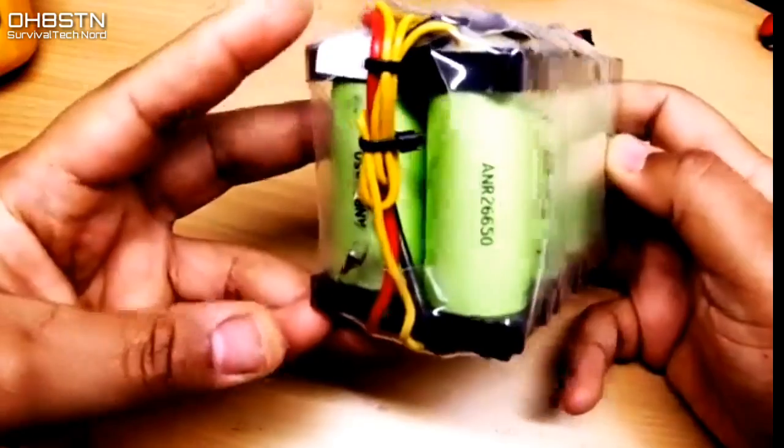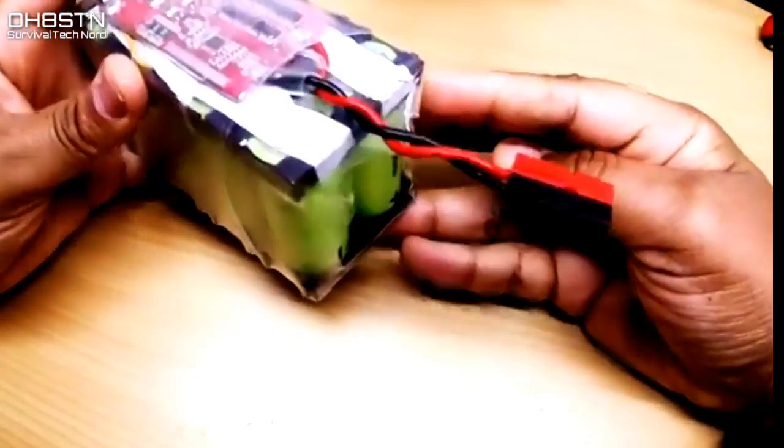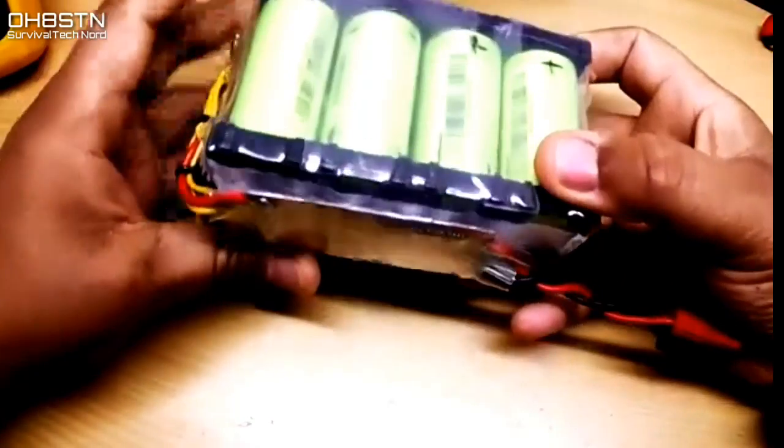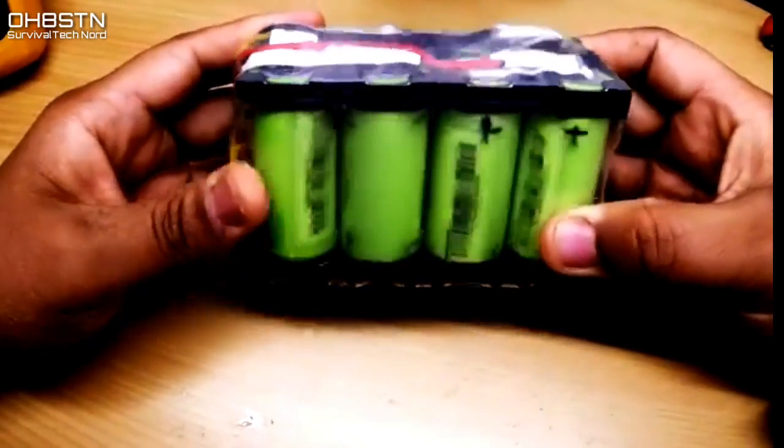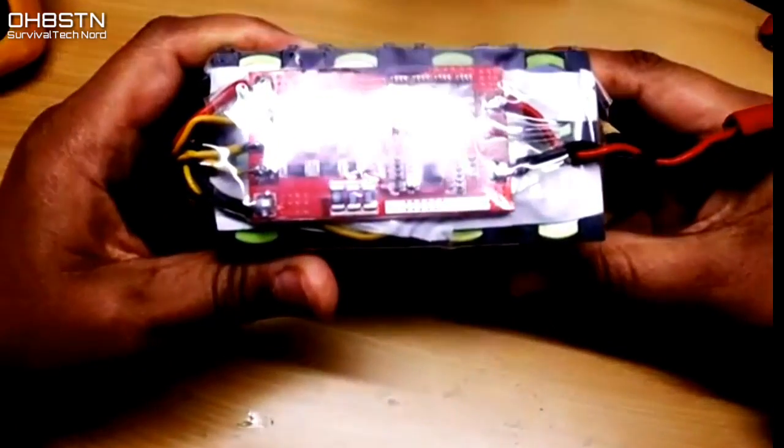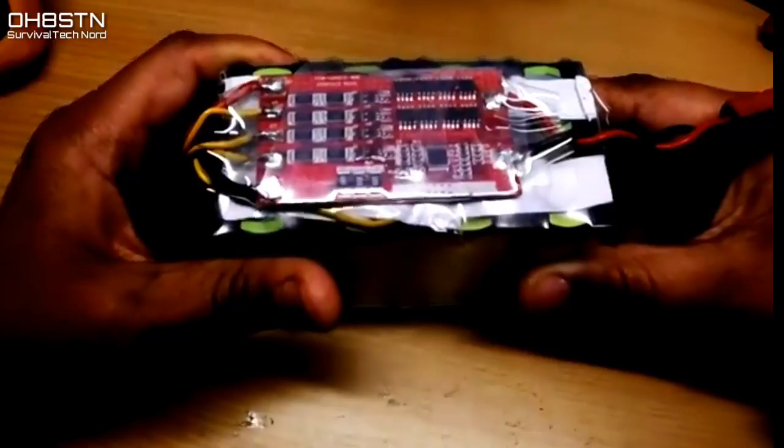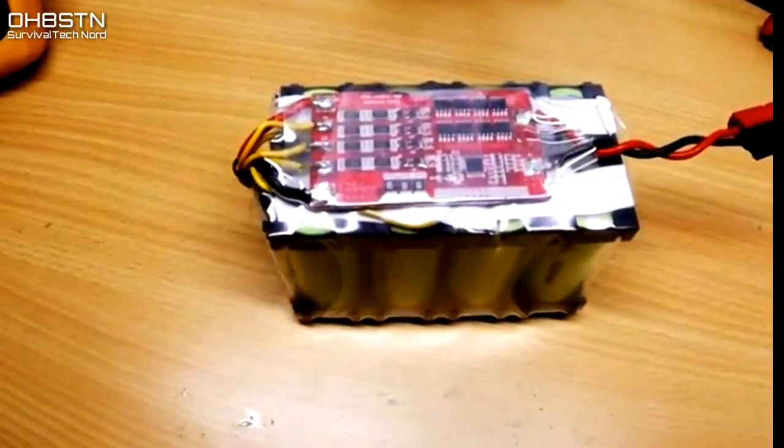Building a 4S1P version of this pack and it's 5 amp hours. 4S3P and that's 7.5 amp hours. 4S4P and that's 10 amp hours.